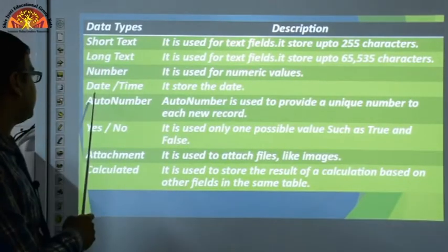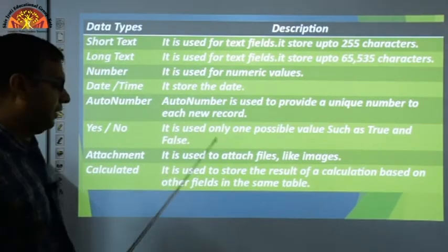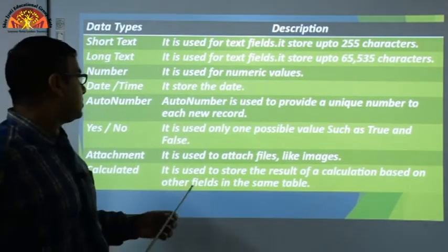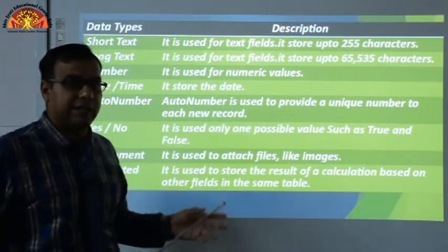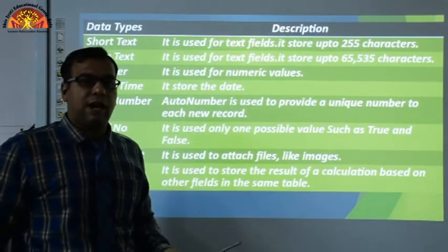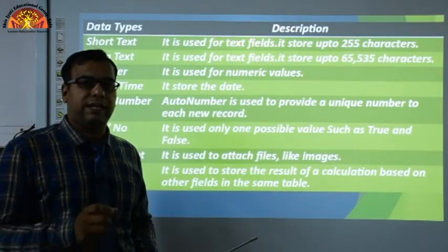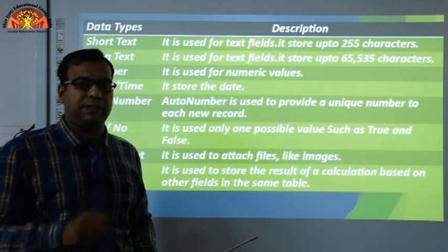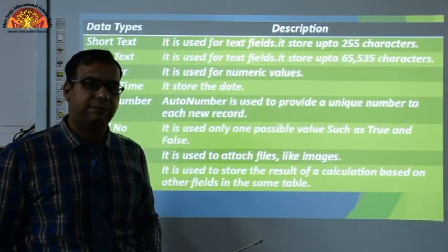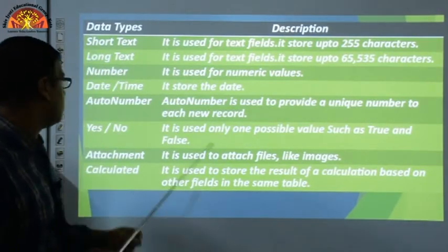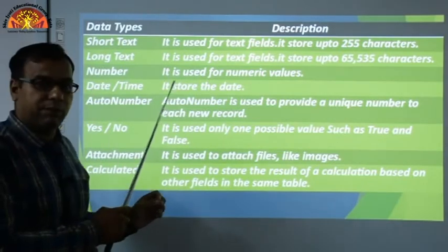Next is Date/Time. It stores date and time values. For example, if you have a column for a student's date of birth, the data type should be Date/Time because date of birth is stored as a date.